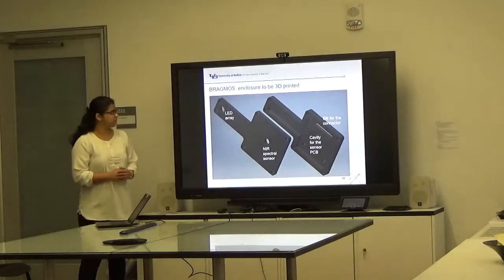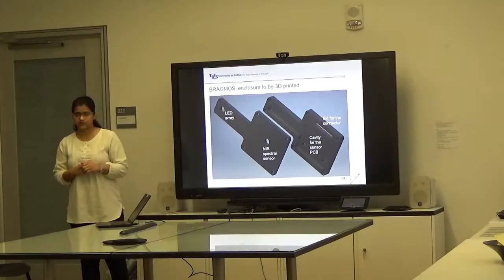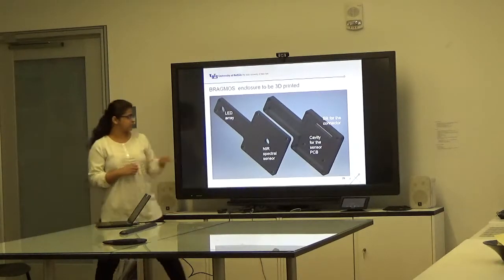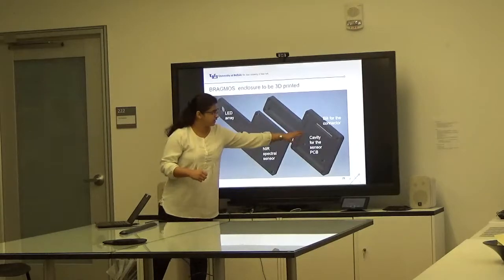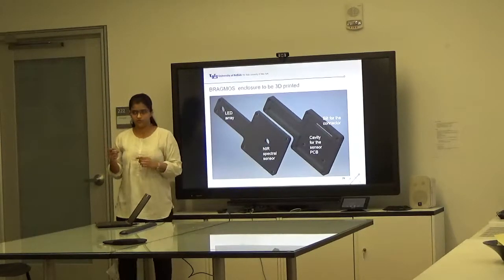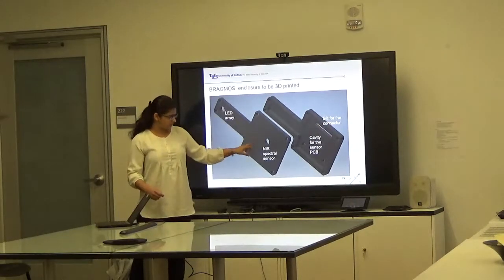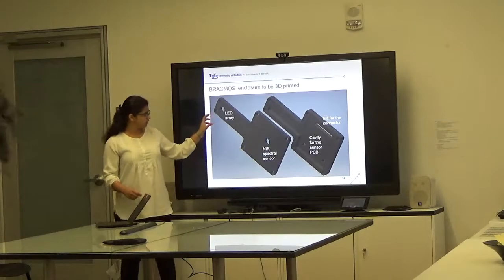This is the enclosure for the sensor that is designed in Autodesk Inventor. This is the cavity where the sensor will get placed, and there is a slot for a connector for connecting it to the Arduino. This is the lid with opening for the spectral sensor and the LED.